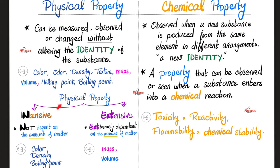Physical properties could be intensive or extensive. Intensive properties are not dependent on the amount of matter, but extensive properties are extremely dependent on the amount of matter. Examples of intensive physical properties: color, density, boiling point. Extensive: mass and volume. A full list of physical properties includes color, odor, density, texture, mass, volume, melting point, and boiling point. A neat way to memorize: density equals mass over volume, so group texture and density together.